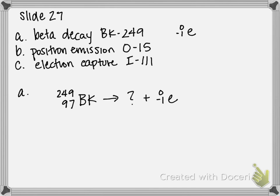So 249 minus 0 gives us, surprise surprise, 249 again. And then 97 minus negative 1 ends up becoming 98, because a negative plus a negative gives you a positive. So symbol 249 over 98. And then if you look at your periodic table, right next to berkelium is californium CF, also named after the state of California.